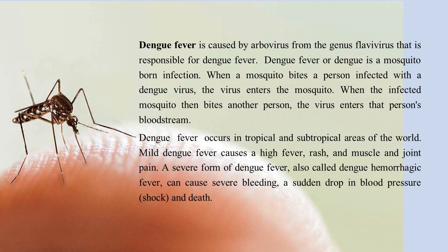Dengue fever occurs in tropical and subtropical areas of the world. Mild Dengue fever causes a high fever, rash, and muscle and joint pain. A severe form of Dengue fever, also called Dengue hemorrhagic fever, can cause severe bleeding, a sudden drop in blood pressure, and death.